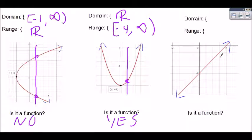How far left? Forever. How far right? Forever. All real numbers. How far down? Forever. How far up? Forever. All real numbers. Is this a function? Draw my vertical line down, crosses once. Once means yes.